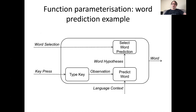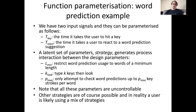We revisit the function structure introduced earlier in this talk. This is the overall function 'predict word.' It consists of three key functions: type key, predict word, and select word prediction. We can parameterize this function structure as follows.